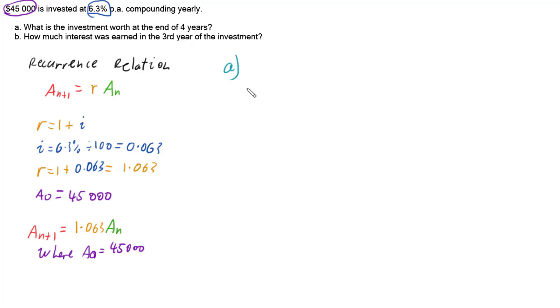At the end of four years, we've got to work out the first year, second year, third year, and then the fourth year. So at the end of the first year, A_1 is going to be, following our relation here, 1.063 multiplied by our first year, our starting amount. So we go to A_0, which was the 45,000, which means that our first year, the end of the first year, we are going to have $47,835 in the account.